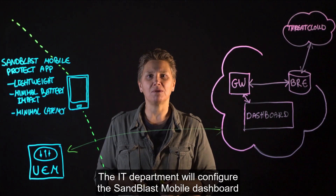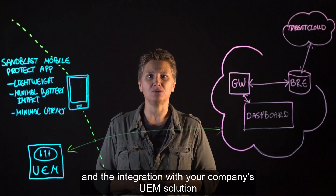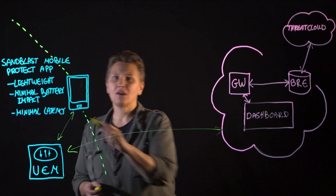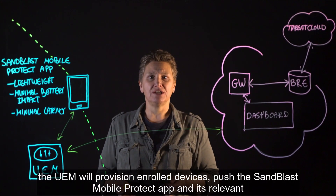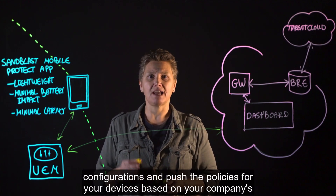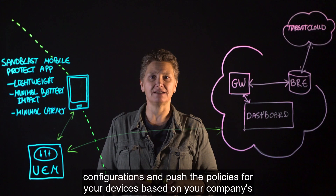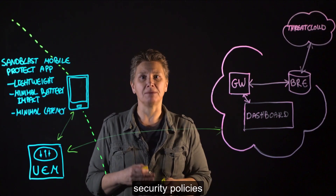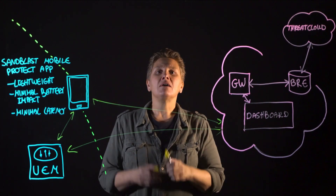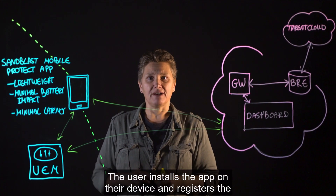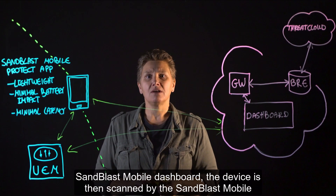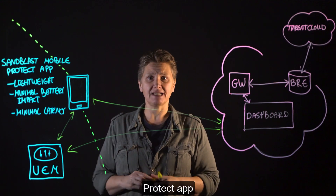The IT department will configure the Sandblast Mobile Dashboard and the integration with your company's UEM solution. The UEM will provision enrolled devices, push the Sandblast Mobile Protect app and its relevant configurations, and push the policies for your devices based on your company's security policies. The user installs the app on their device and registers with the Sandblast Mobile Dashboard. The device is then scanned by the Sandblast Mobile Protect app.